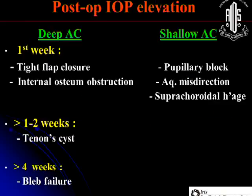You also look at the anterior chamber depth when you have high intraocular pressure. Depending on the post-operative phase when the patient presents with high IOP — if within the first week, the most likely diagnosis is either tight sutures or internal ostium obstruction. If the patient presents after a couple of weeks, it's most likely a Tenon's cyst. And after four weeks, as Dr. Mayuri described, a late bleb failure.